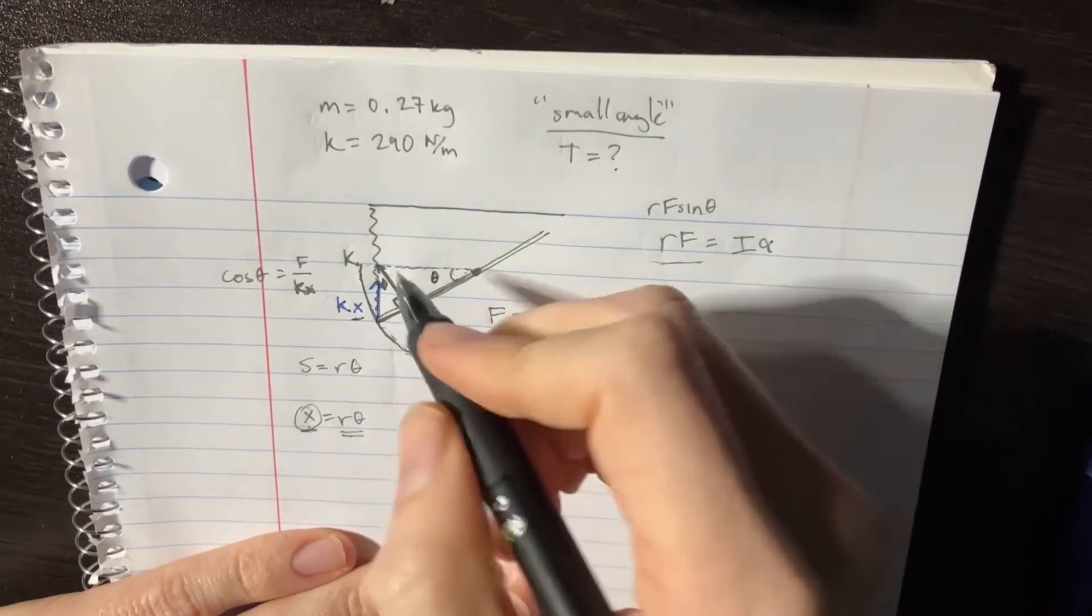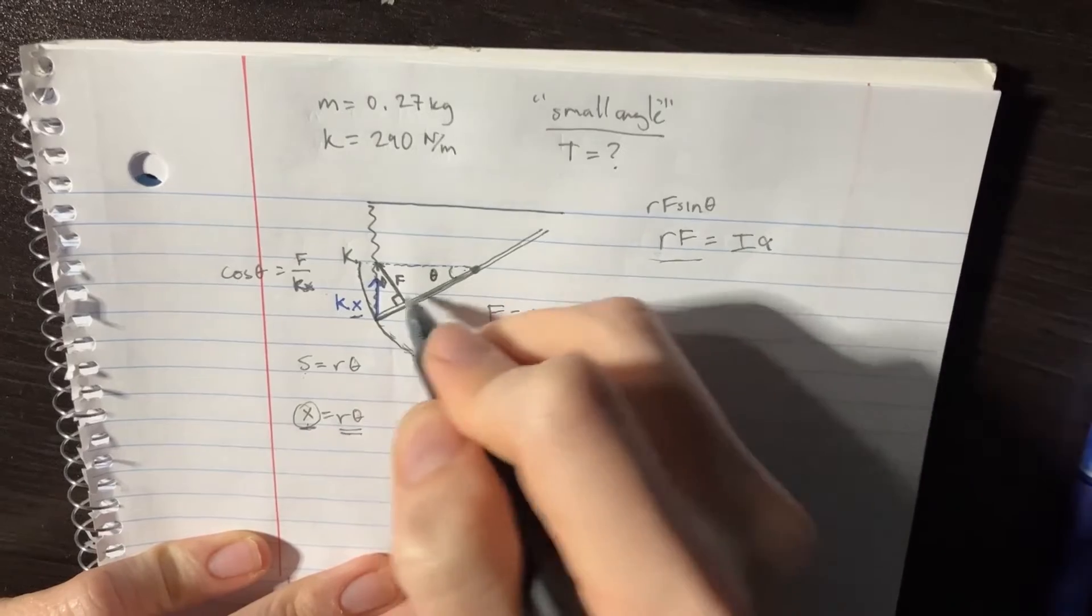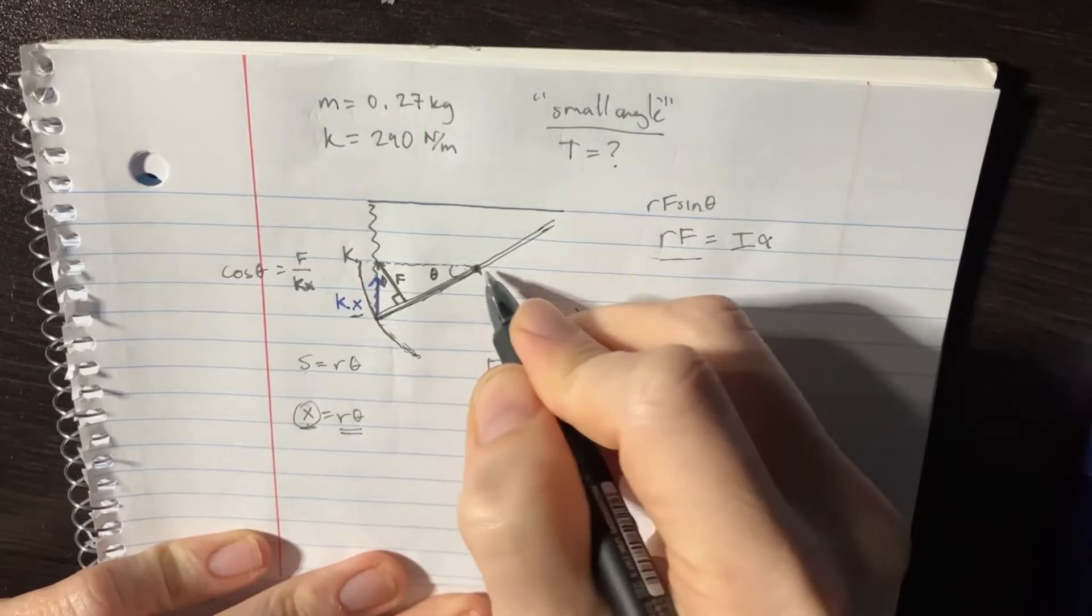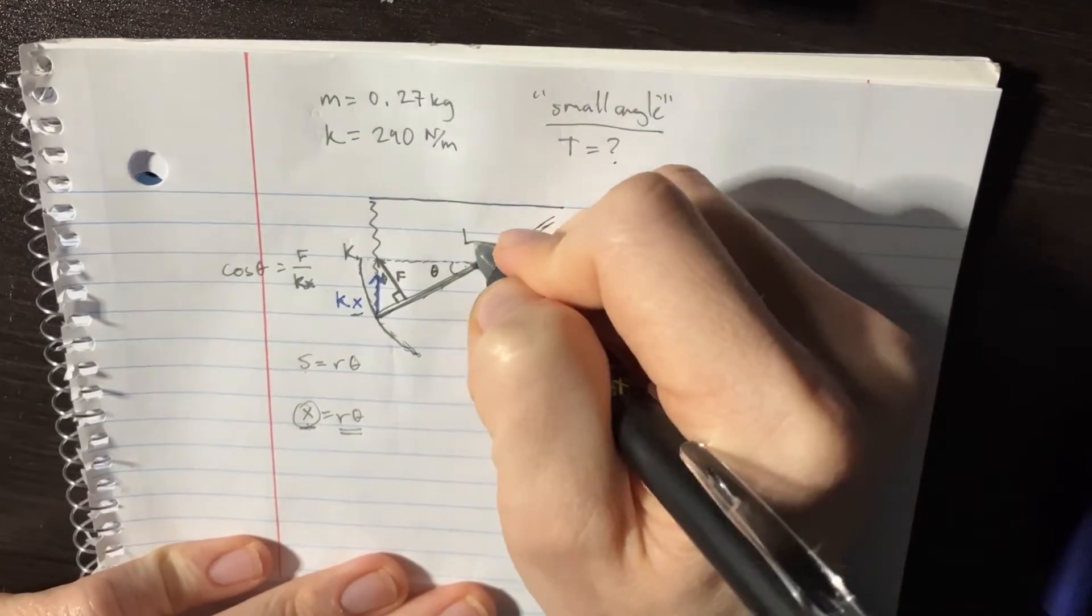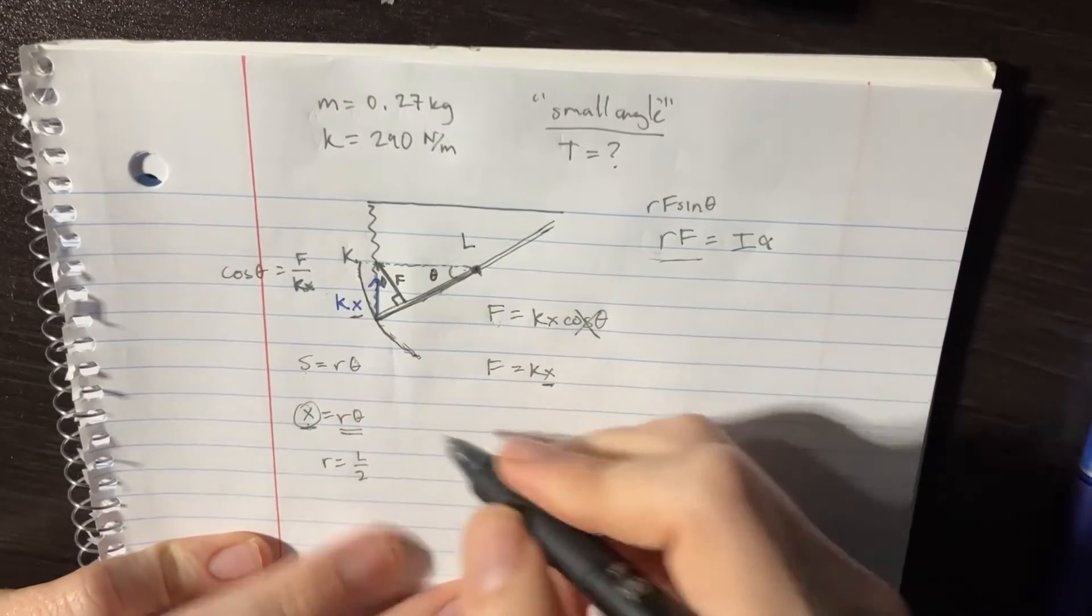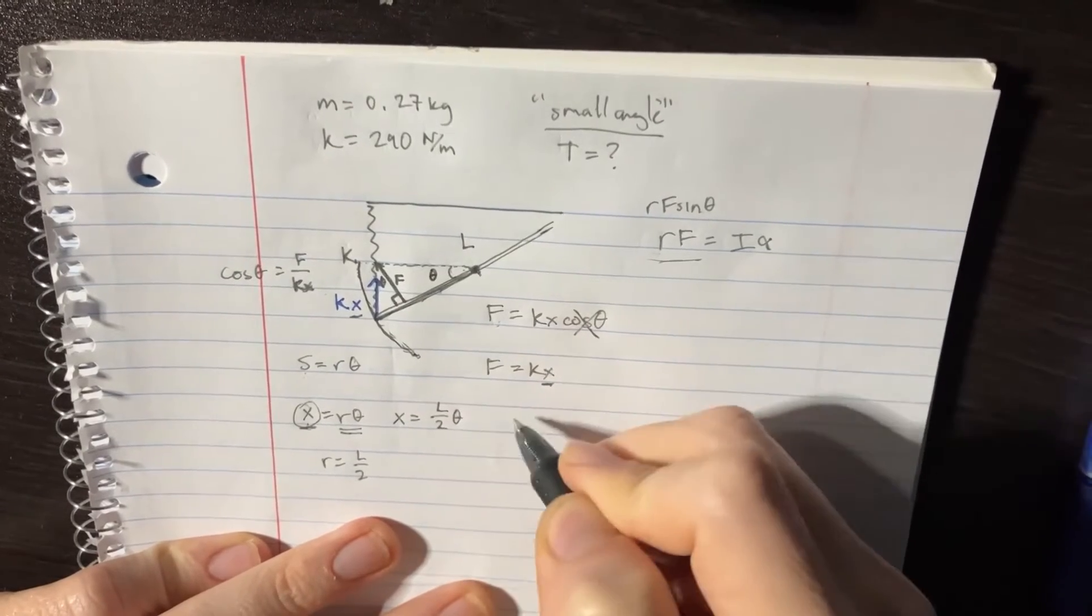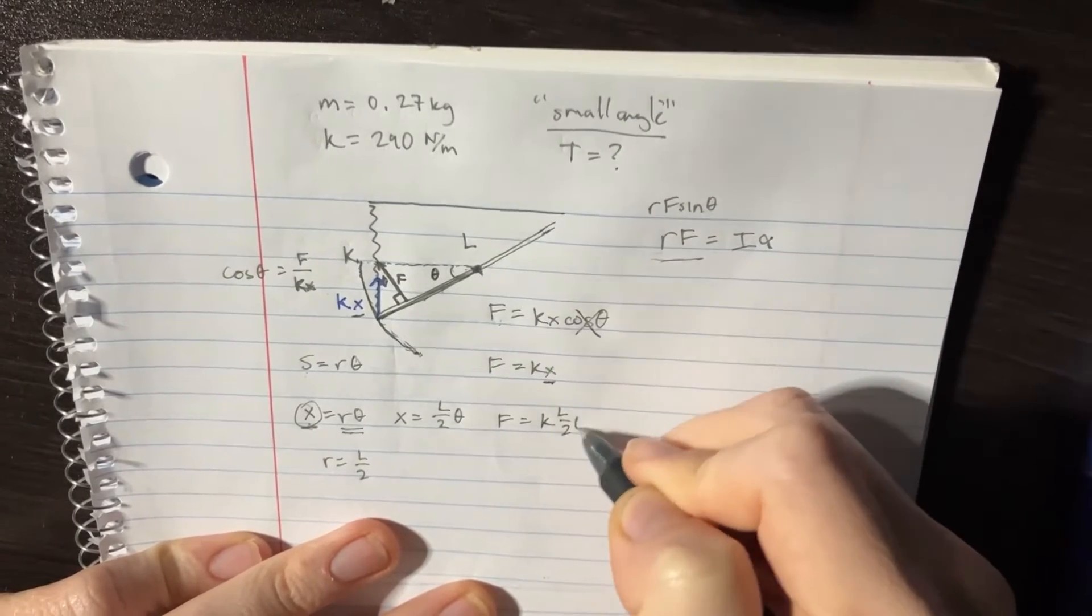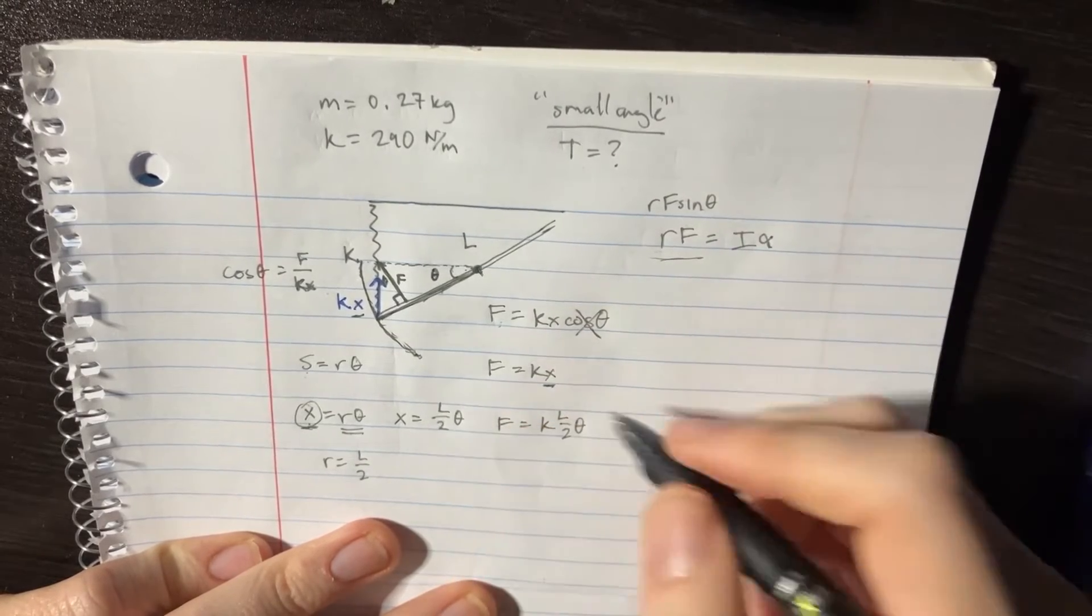And R is just this length and we know this length. We're going to want to actually change this in terms of L because we're having to use I. So let's just consider this as being an L, and obviously R is equal to L over two. So we'll replace that in there for R as well. So not only is X equal to L over two, but F is actually equal to K L over two theta.